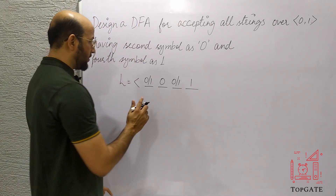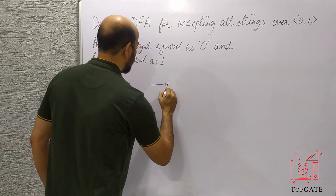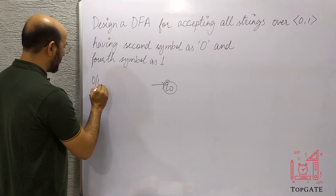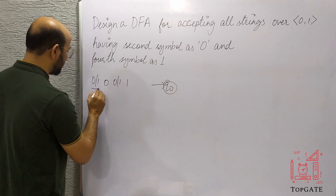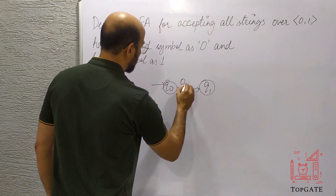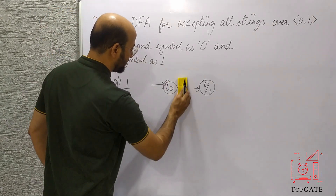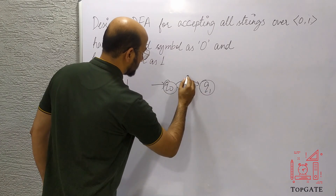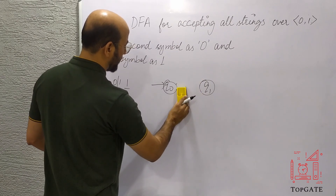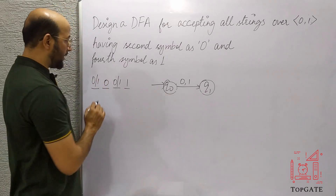Let us design a DFA for the minimum string first. The minimum string is: position 1 is 0 or 1, position 2 is 0, position 3 is 0 or 1, position 4 is 1. Starting from the initial state Q0, at Q0 I can have 0 or 1, so from Q0 to Q1 I will take a transition on 0 and 1. Both transitions go to Q1. Q0 is now complete.